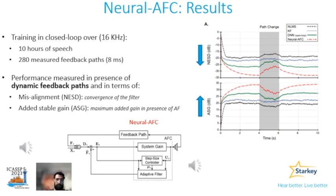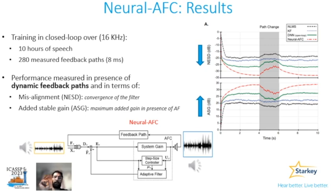Let's get back to the audio example. [Input audio plays] And the output. [Output with neural AFC plays] As you notice, the second beep in the middle is completely eliminated, even though the feedback path is changing.